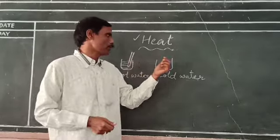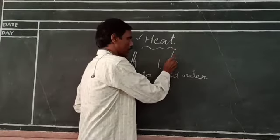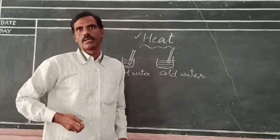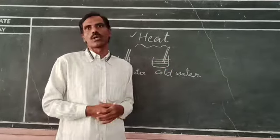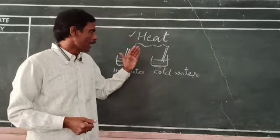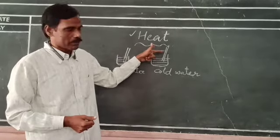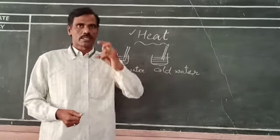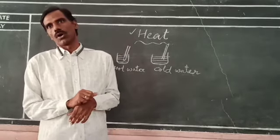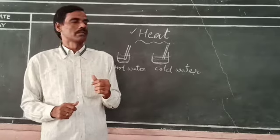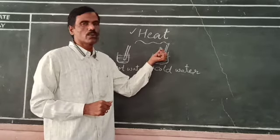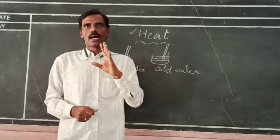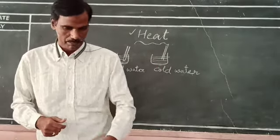When we place the same thermometer in cold water, the heat energy retained by the mercury is transferred into the cold water. This happens until the thermometric liquid, that is mercury, and the cold water reach the same hotness or coldness. This shows that the liquid in the thermometer and the water are in thermal equilibrium.